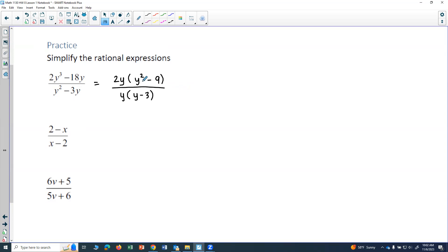Now in the top, in the numerator, I'm not done factoring, because y squared minus 9 is the difference of 2 squares. So I know that that can actually factor more. And the difference of 2 squares is always the square root of the first term plus the square root of the second term, so y plus 3 in this case, times the square root of the first term minus the square root of the second term, so y minus 3.